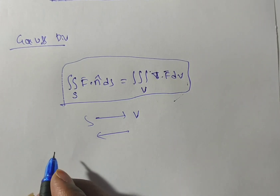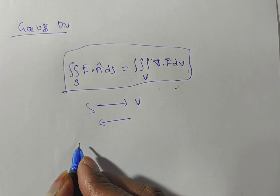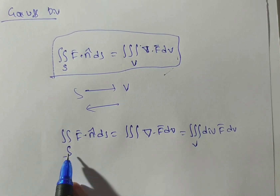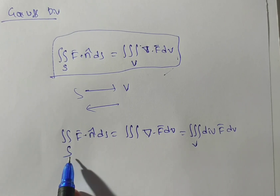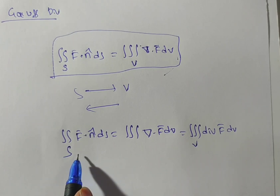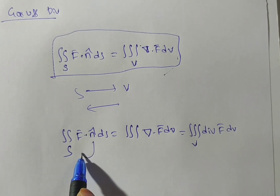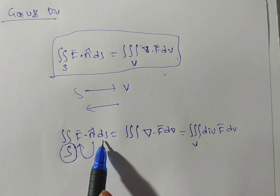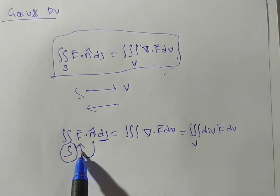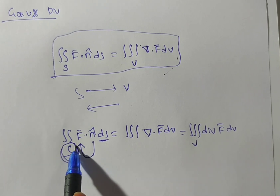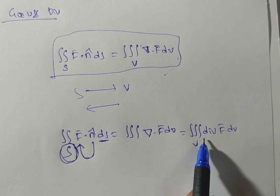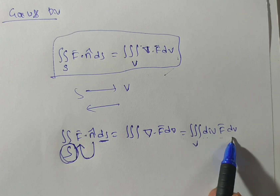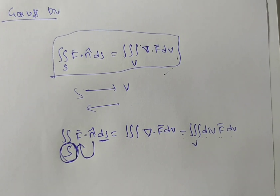Based on the formula, I will tell the statement. Looking at the left side, we have a surface integral over S. In a surface integral, the normal component of a vector function F-bar in a closed surface S is equal to the divergence of the same vector F-bar in a volume V bounded by the surface, enclosed by surface S.